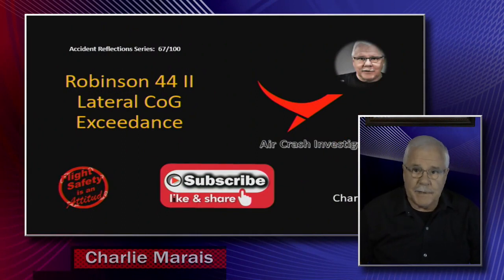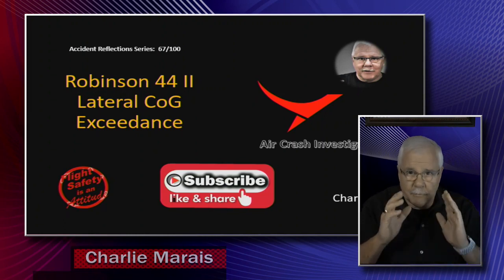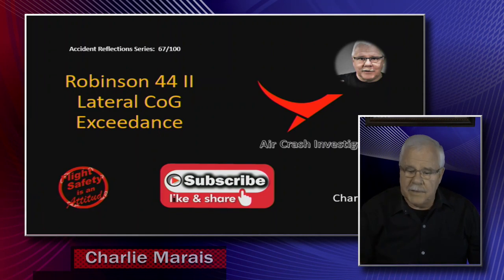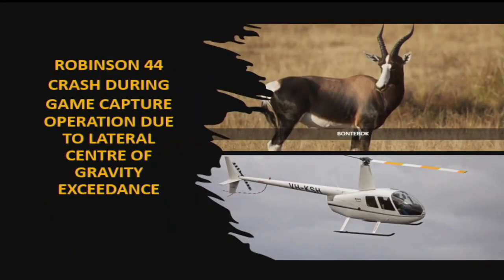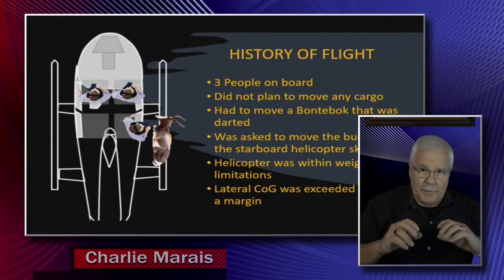Welcome to the Accident Investigator. Today we're going to have a look at an R44 that ran out of lateral control during a game operation. Here you can see a picture of the aircraft — a Robinson R44. What happened is that they moved a buck, called a pontobuck, which you only get here in South Africa, and they put it on the right-hand skid of the helicopter.